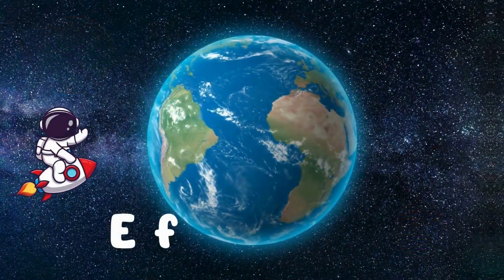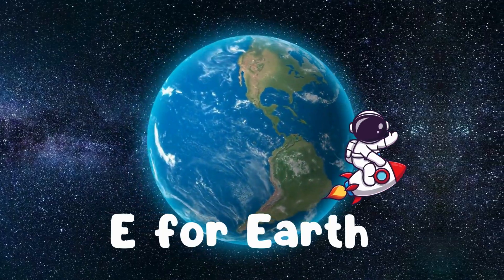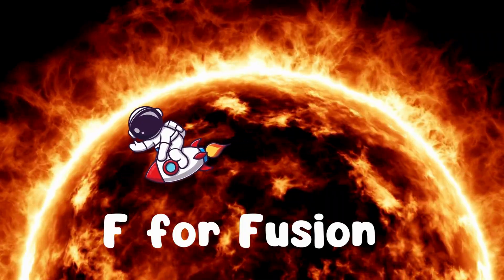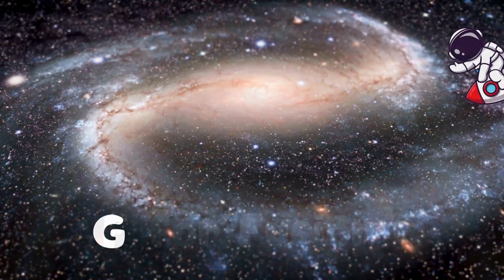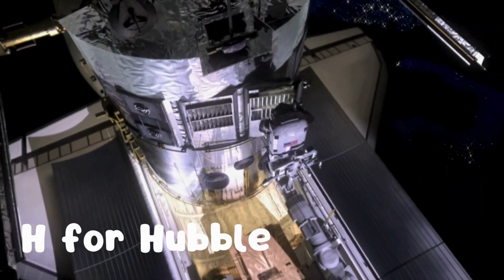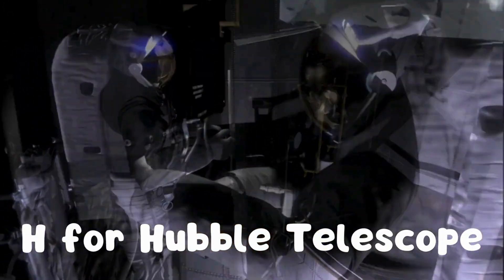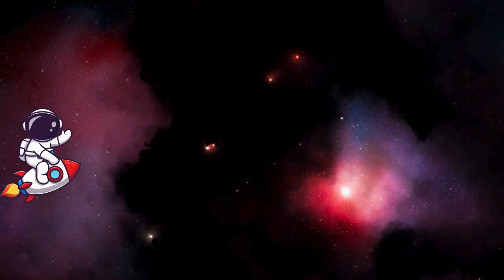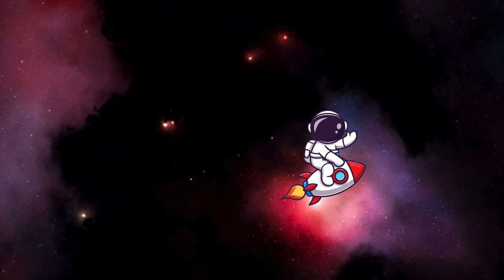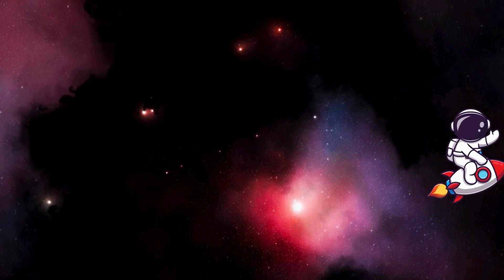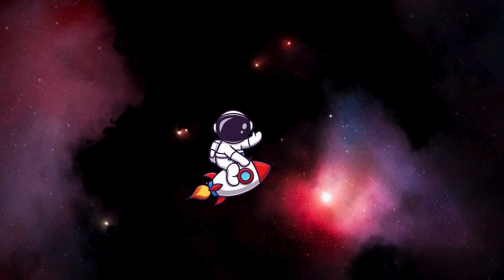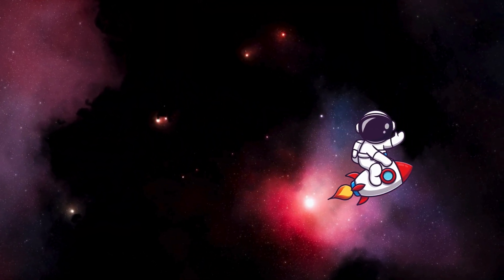E for Earth, so green and blue. F for fusion, where stars shine through. G for galaxies, spinning wide. H for Hubble, taking us on a ride. Come on kids, let's sing and play, learning the stars in a fun new way. From A to Z we're gonna see the wonders of space, so wild and free.